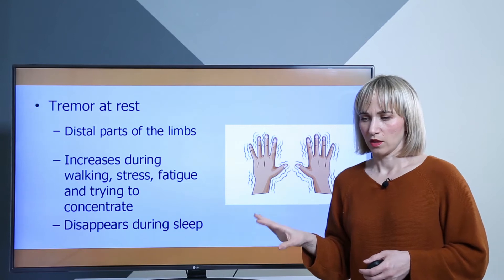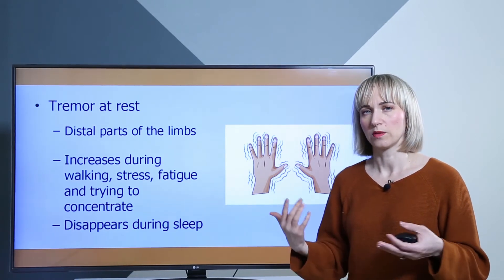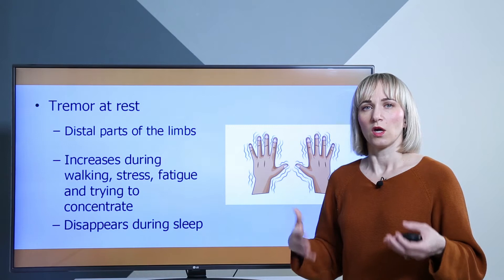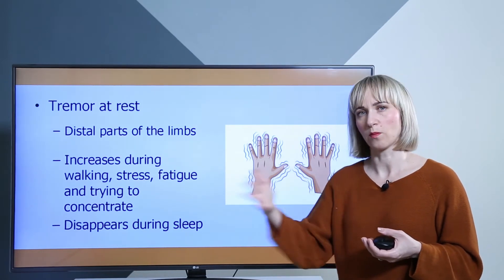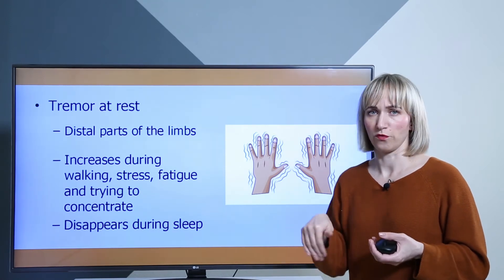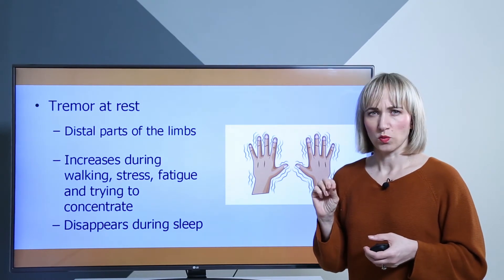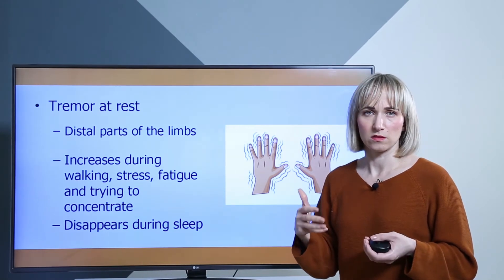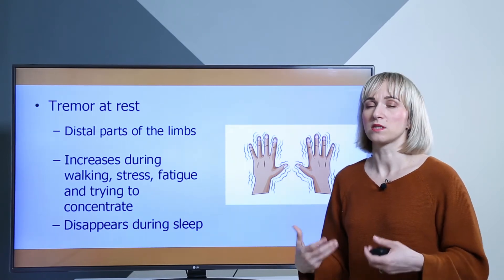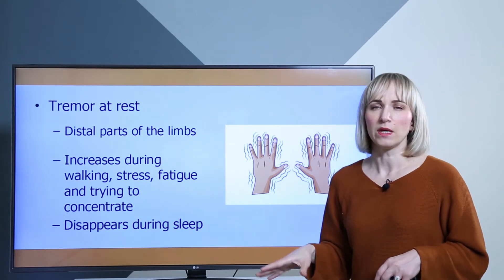One of the typical symptoms of Parkinson's is tremor at rest. The difference from cerebellar disorders is that the Parkinson's patient, while standing or not doing anything — at rest — has a tremor, but while moving, the tremor completely disappears. Typical tremor is in the hands, limbs, or feet — the distal parts of the body. The tremor increases when the patient is stressed, concentrating on something, or walking in a stressful environment. But while the patient is sleeping, the tremor disappears.